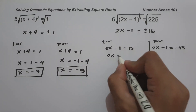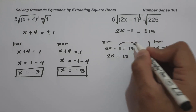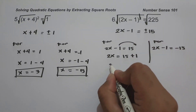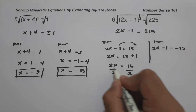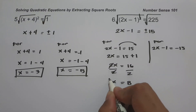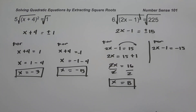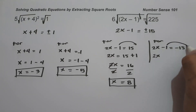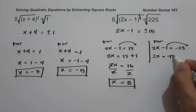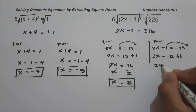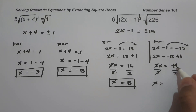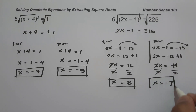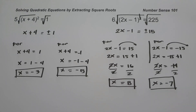For 2x - 1 = positive 15: move negative 1 to the other side, giving 2x = 15 + 1 = 16. Dividing both sides by 2, x = 8. For 2x - 1 = negative 15: move negative 1 to the other side, giving 2x = negative 15 + 1 = negative 14. Dividing both sides by 2, x = negative 7. Therefore, the values of x are 8 and negative 7.